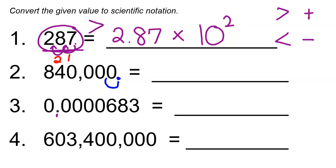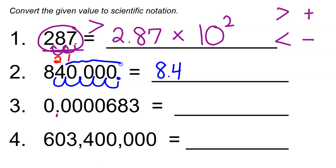Moving the decimal point once, twice, three times gives us 840.000 — still not between 1 and 10. Moving it a fourth time gives us 84.0 — still not there. Moving it a fifth time gives us 8.400, which is between 1 and 10. So our number is 8.4. The trailing zeros don't need to be written because in the original value those zeros were not significant — we only show significant figures in scientific notation.